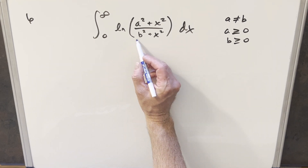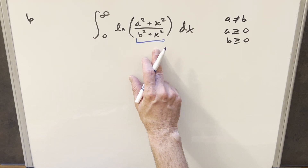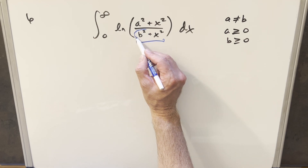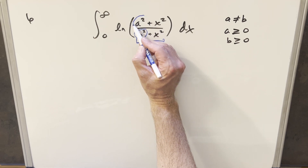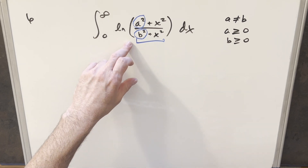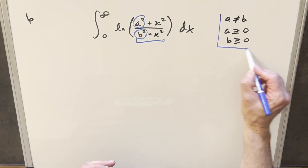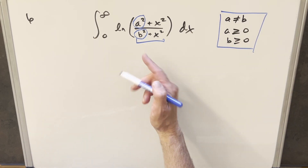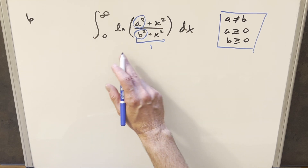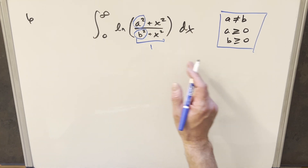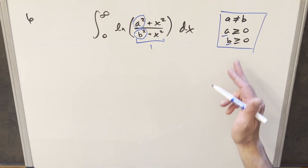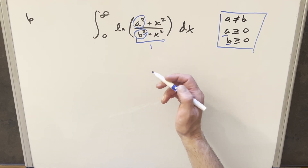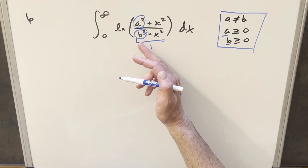I thought it was pretty interesting. It looks pretty tricky having this much stuff going on inside the natural log. Also, oftentimes I don't really do problems like this where they don't specify exactly what a and b are. They actually didn't put any conditions on a and b. I eliminated the a equals b situation because if a equals b, the whole thing becomes 1, natural log of 1 is 0, so integrating 0 is just not interesting. And I eliminated the negative case for a and b because we're squaring both of them, so the negative case gives the same result as the positive version.